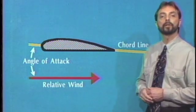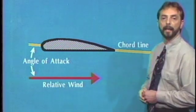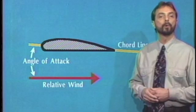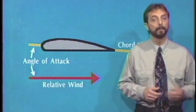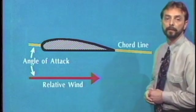Relative wind is the direction of airflow with respect to the wing. It's created by the motion of an airfoil through the air, by the motion of air past an airfoil, or by a combination of the two.